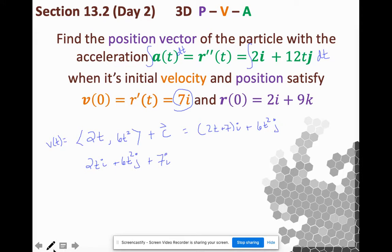Now that I have velocity that satisfies the initial condition, how do I get position back? Anti-differentiate velocity, and I get t squared plus 7t i. Plus what? t cubed over 3, but with that 6 there, I get a 2. Plus what? What is my initial condition?